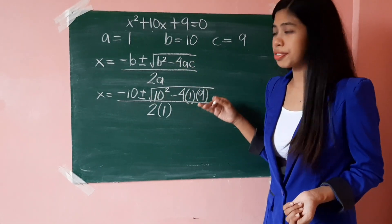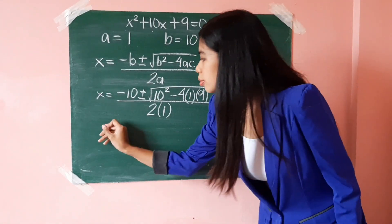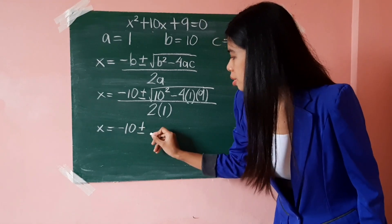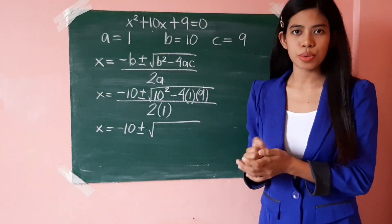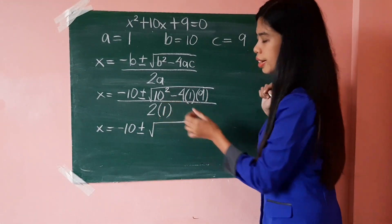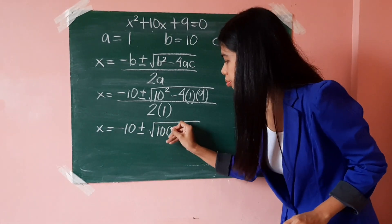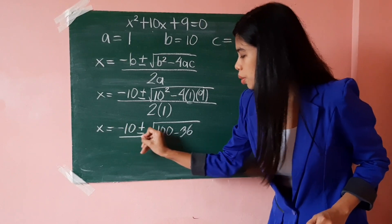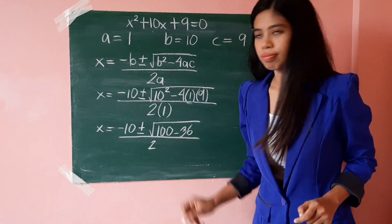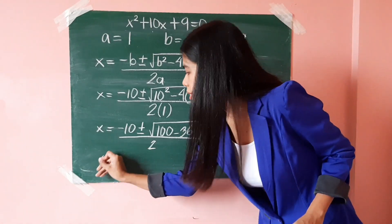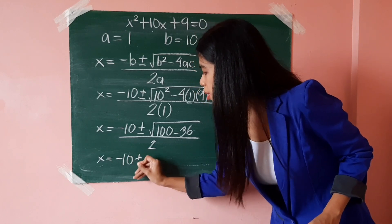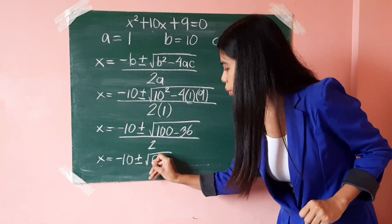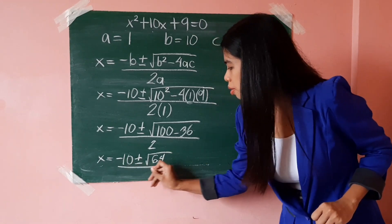Once you have substituted all of the values of a, b, and c, we may now simplify. So x equals negative 10, plus or minus square root of — let us simplify everything inside the radical — 10 squared is 100, minus 4 times 1 times 9 is 36, all over 2 times 1 which is 2. So that's negative 10, plus or minus square root of 100 minus 36, which is 64, all over 2.